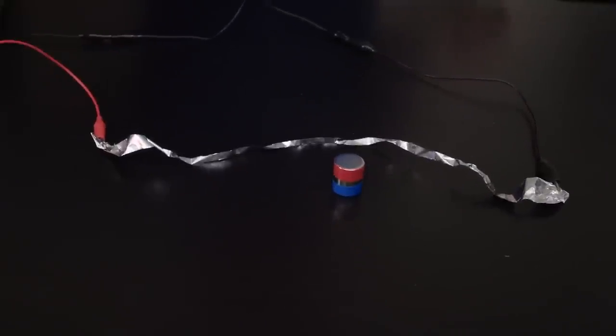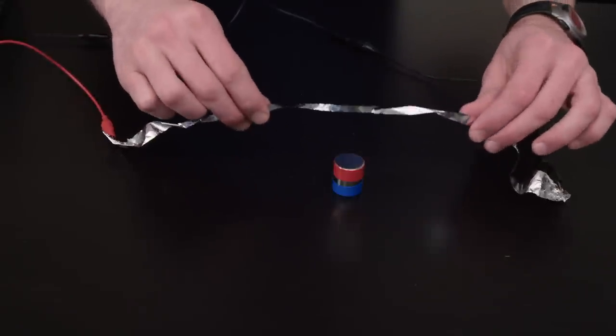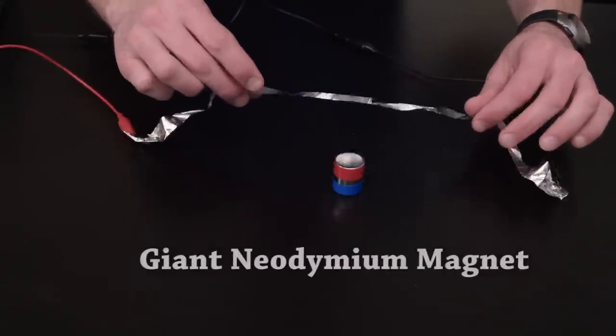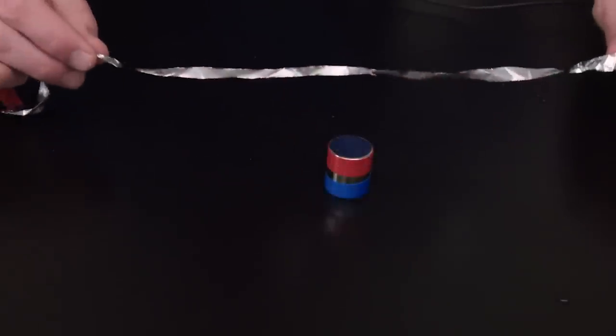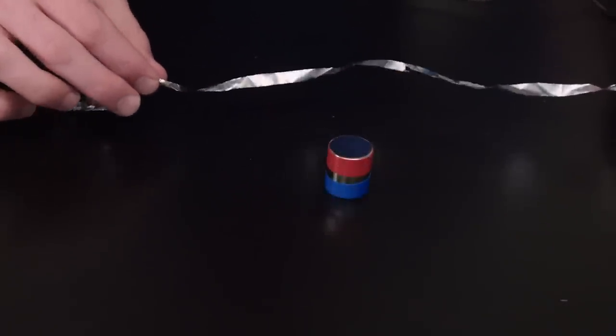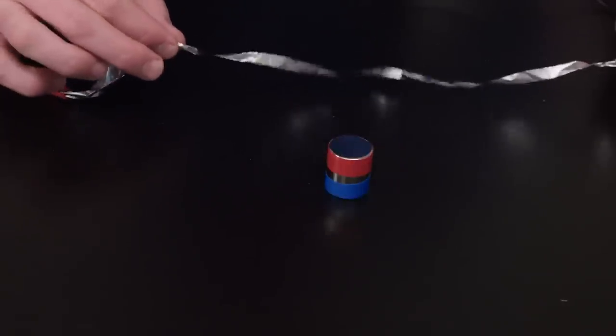Another way to demonstrate this would be with a strong magnet and aluminum foil. Here, this giant neodymium magnet can be used to push currents around. I have it north up if you're interested. Watch as the current is pushed all around.